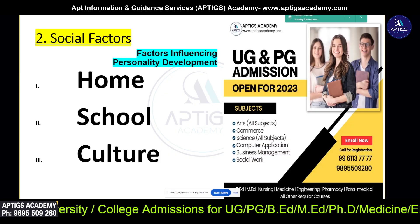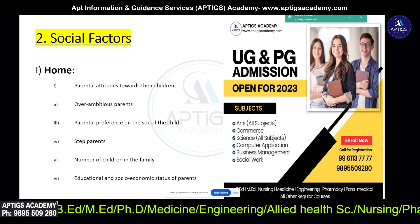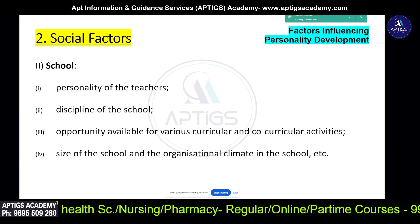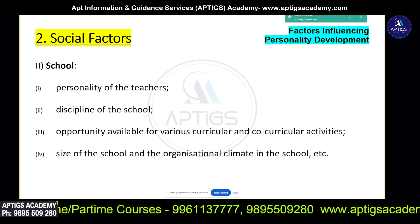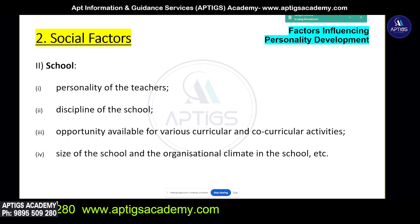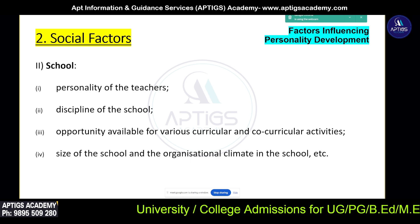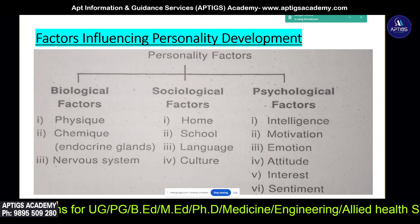The next category is social factors: home, school, and culture. Under social factors, we look at the personality of the teacher, discipline of the school, opportunities available for various curricular and co-curricular activities, and the size of the school and organizational climate in the school. In summary, personality factors include biological factors, sociological factors, and psychological factors.